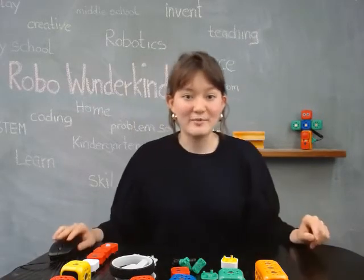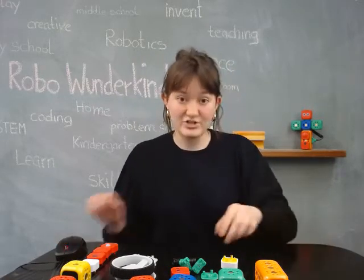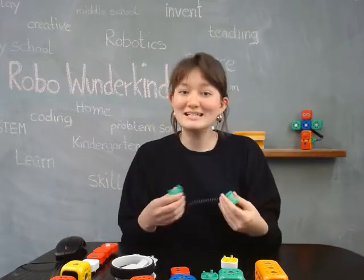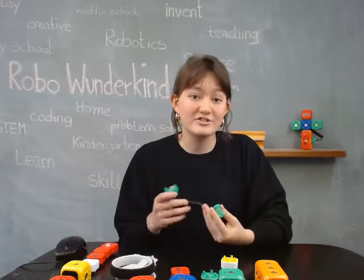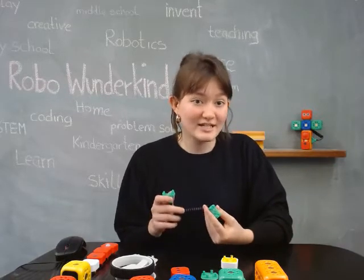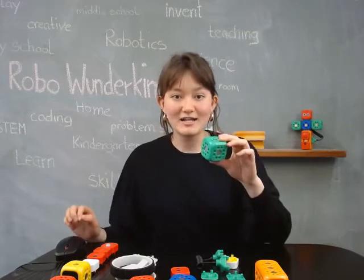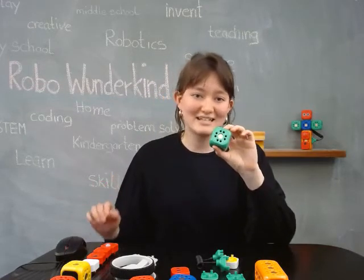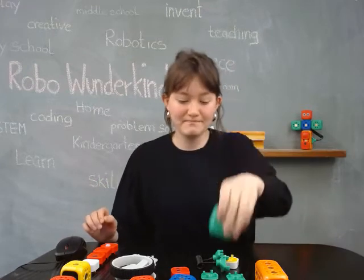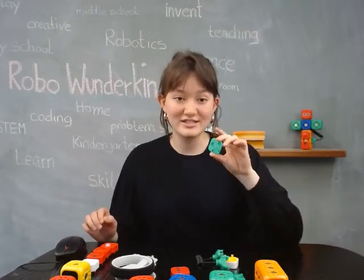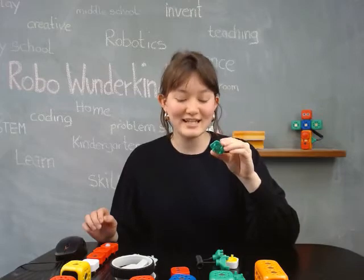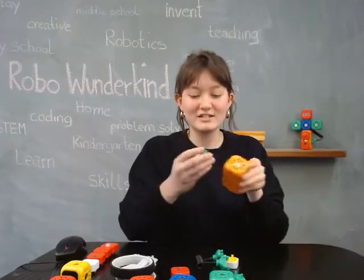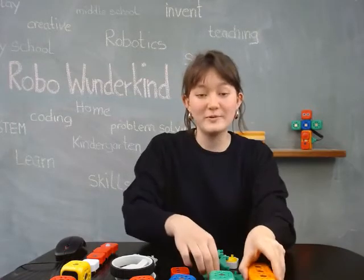Now let's talk about our connectors. The wired connector is a cable that can connect two blocks to allow for movement, distance, or a setup that requires separate blocks. The connector block has connection faces on all six sides and is useful as a connector or a structural part of the build. We also have universal connectors — these are little green pieces that can fit in between two blocks to connect them, with little poco pins, and you can use either side for your build.